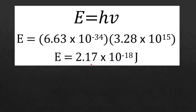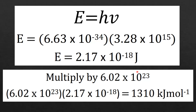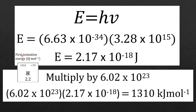To get the energy required to remove one mole of electrons, we multiply by Avogadro's constant (6.02 × 10²³). Multiplying 6.02 × 10²³ by 2.17 × 10⁻¹⁸ joules gives a first ionization energy for hydrogen of 1310 kJ·mol⁻¹. A check against the data booklet shows the accepted value is 1312 kJ·mol⁻¹, confirming our answer is correct to 3 significant figures. Don't forget — a link to a practice worksheet with answers can be found in the video description.